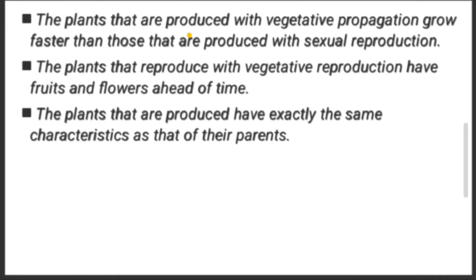The first advantage is: plants produced through vegetative propagation grow faster than those produced through sexual reproduction. As you already know, plants can reproduce both sexually and asexually. But when a plant is reproduced through vegetative propagation, the chance and rate of growth become much higher compared to sexual reproduction.